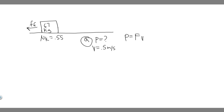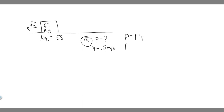The force we're going to have to overcome is the force of friction. If we want to push the box at constant speed, our applied force just needs to equal the force of friction. So what we need to plug in for F is just going to be the force of friction, and the power is going to equal the force of friction times velocity.